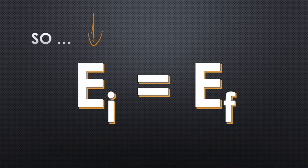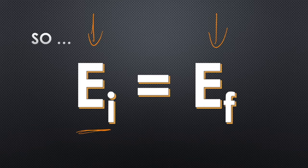So how we're going to write this is: all the energy at the start is equal to all the energy at the end. EI — energy initial — has to equal EF — energy final. That's how we're going to start any energy conversion question: list the types of energy we have at the start and the types we have at the end, and make sure they equal out.